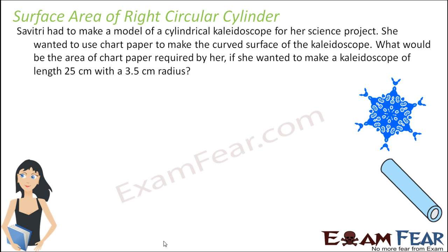Let's check some numerical problems. Savitri is a student who had to make a model of a cylindrical kaleidoscope for her science project. She wanted to use chart paper to make only the curved surface of this kaleidoscope. What would be the area of chart paper required if the kaleidoscope has a length of 25 cm and a radius of 3.5 cm? Always use radius rather than diameter — if the value is given as diameter, convert it to radius to avoid getting wrong answers.